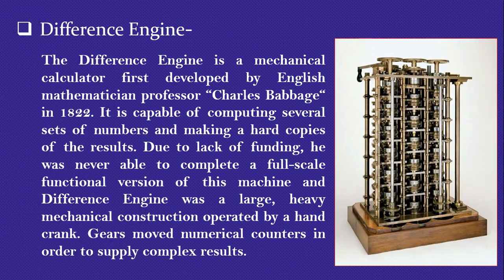The next device is the Difference Engine. The Difference Engine is a mechanical calculator first developed by English mathematician Professor Charles Babbage in 1822. It is capable of computing several sets of numbers and making hard copies of the results. Due to lack of funding, he was never able to complete a full-scale functional version. The Difference Engine was a large, heavy mechanical construction operated by a hand crank; gears moved numerical counters in order to supply complex results.